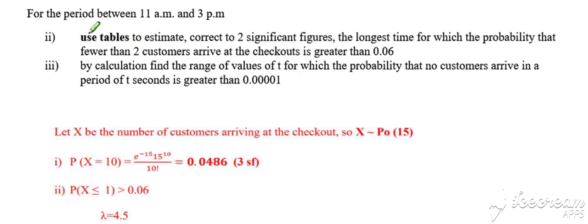In the next part of this example, we've got something a little bit different. This time we want to work out the longest time for which the probability that fewer than two customers arrive at the checkout is greater than 0.06. So we're being asked to work out an unknown time value. With a Poisson distribution, if you don't know the time interval, then you don't know lambda. Essentially, this kind of question is all about trying to identify what lambda value corresponds to the probability statement that's given.